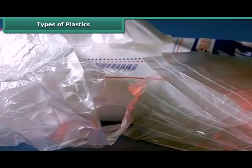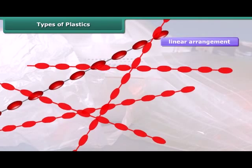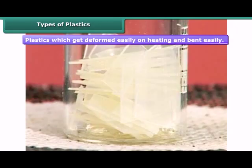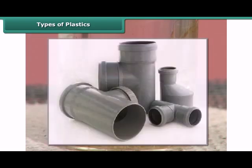The constituent units of thermoplastics have a linear arrangement. On being heated, thermoplastics become mouldable and soft. Now they can be recast in different shapes and then cooled, causing them to harden without any chemical change. Therefore, they can be recycled.